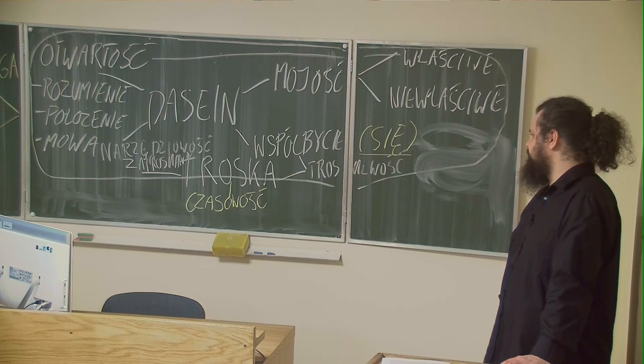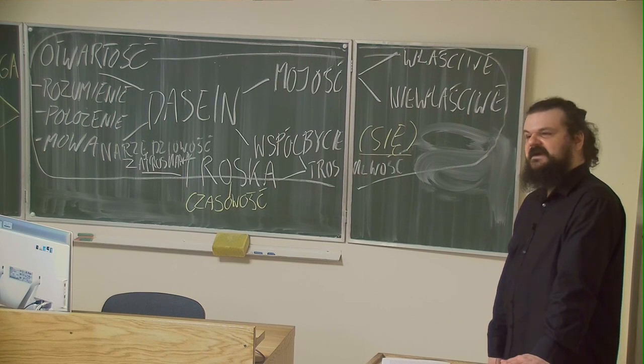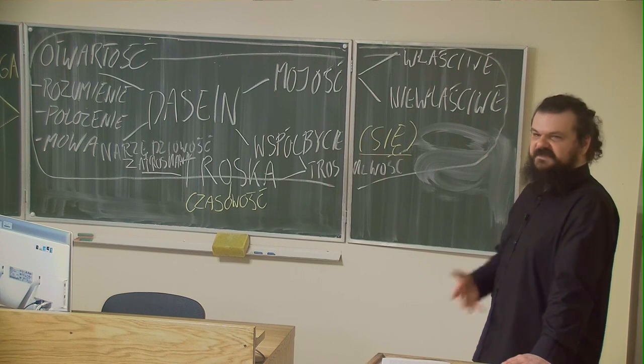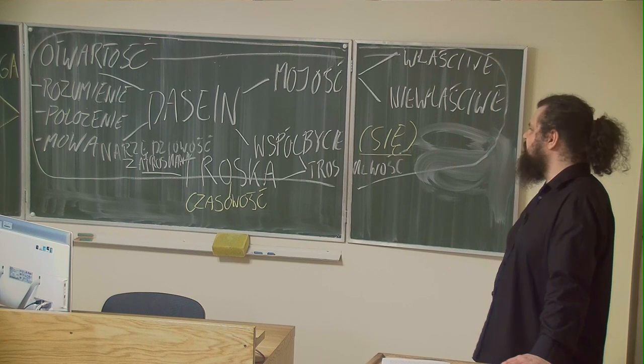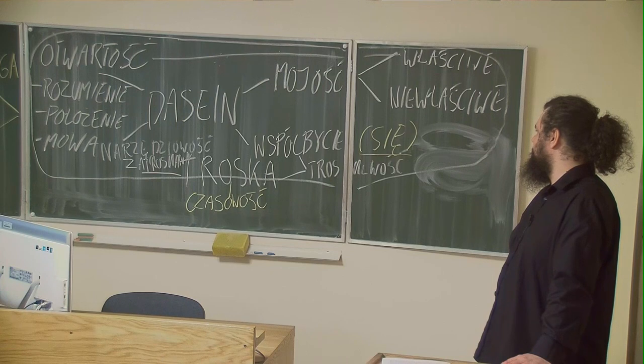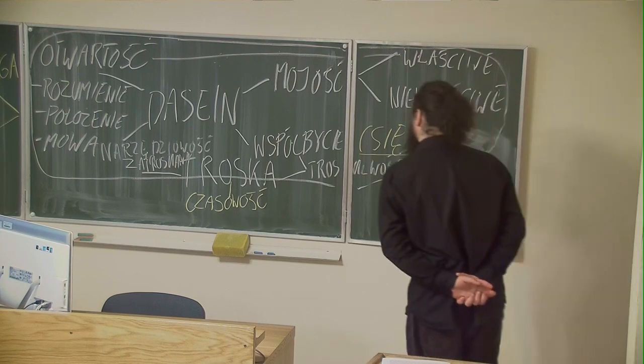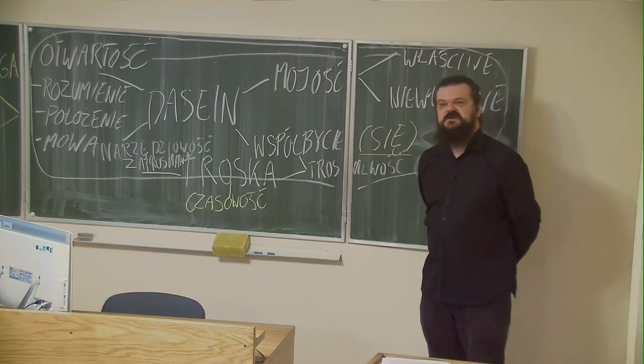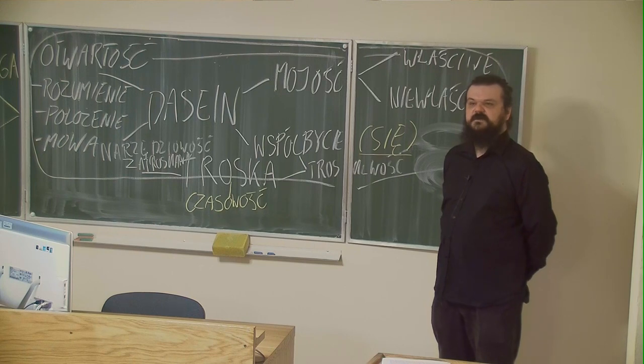But for some reason this is extremely difficult. Heidegger says, initially we are in the They and usually remain in it. So the question of why this is so difficult requires pointing to further elements of the entire analysis. The They modifies the entire structure of our being, modifies our openness. On the basis of the They we are inauthentic, which determines that inauthentically each of these moments also concretizes. We don't understand something in any other way than the one suggested to us by the common understanding of the They. We are in the mood which the They dictated to us.